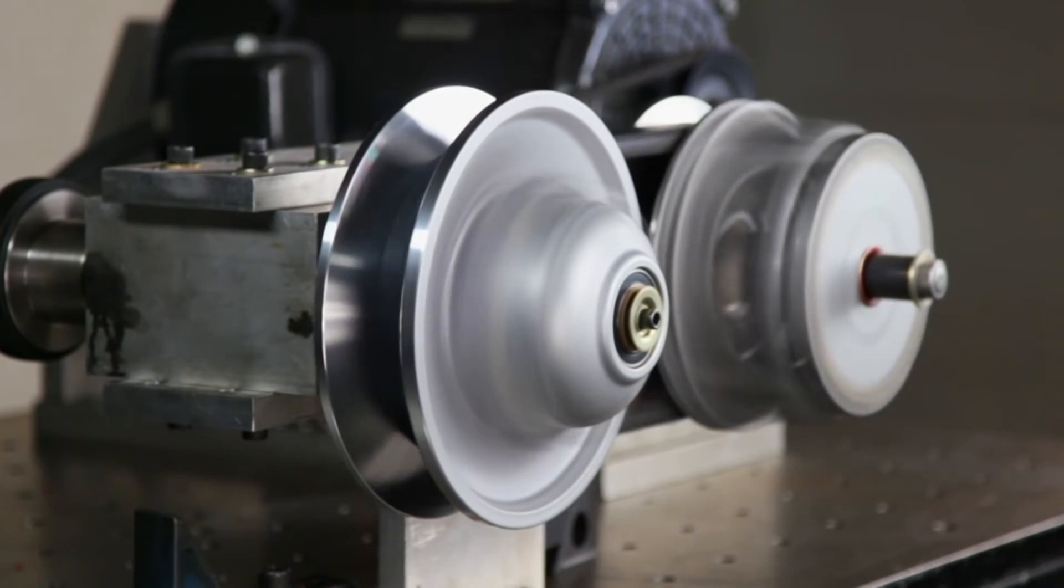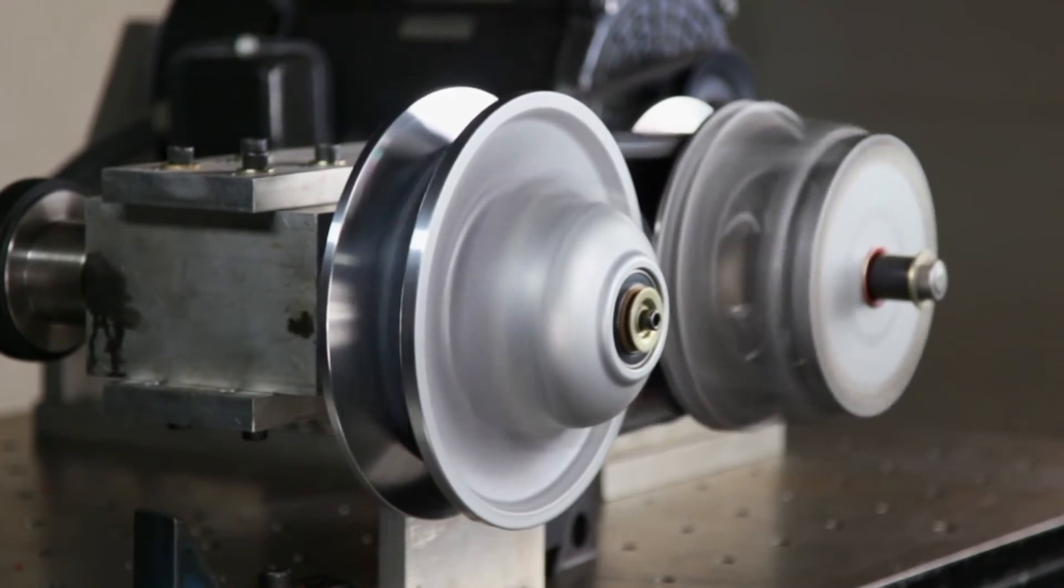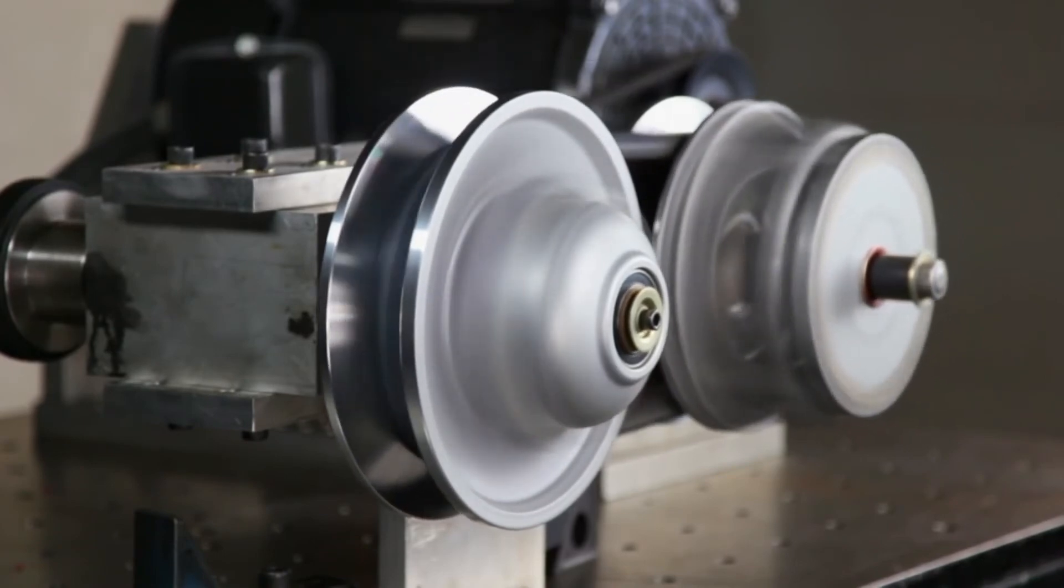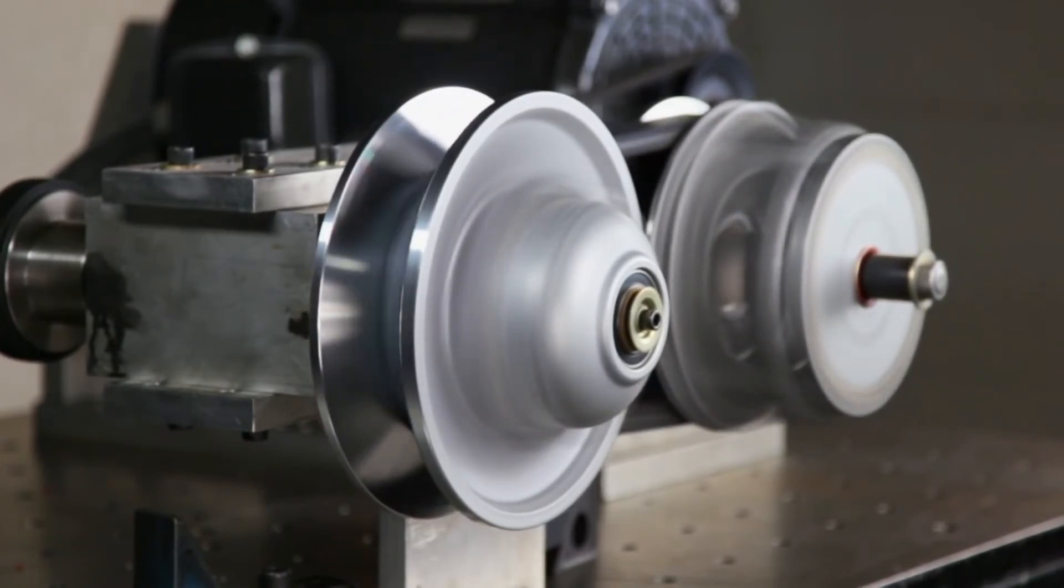As the throttle is depressed, the primary clutch closes and tightens the belt. This forces the secondary clutch sheave to spread and shifts the CVT to a lower ratio. The vehicle accelerates.